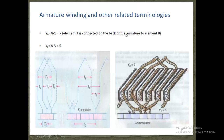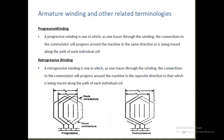Moving to armature winding terminologies: Yb is the back pitch, for example 7 minus 1 equals a back pitch of 7, where element 1 is connected at the back of the armature to element 8. Progressive winding is one in which, as one traces through the winding, the connections to the commutator progress around the machine in the same direction as the path being traced along each individual coil.